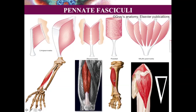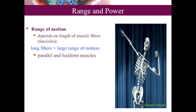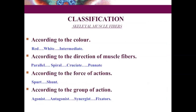Regarding range versus power of muscle contraction: range depends on the length of muscle fibers — the longer the fiber, the greater the range. Examples are parallel and fusiform fasciculi. Power depends on the total number of muscle fibers — the more fibers, the greater the power. Examples are convergent and pennate types. Multipennate muscle fibers have maximum power because more fibers are enclosed in a small area.